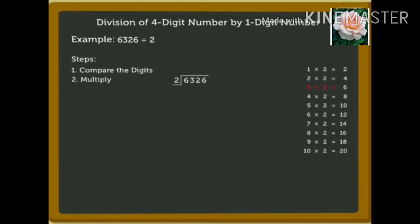Hence, we write 3 above the 6 and the number 6 in the thousands column under 6. Subtract 6 from 6. The remainder is 0 and it is written in the thousands column. Bring down the next digit, that is 3, and write it beside 0. What do we do next? Back to comparison.